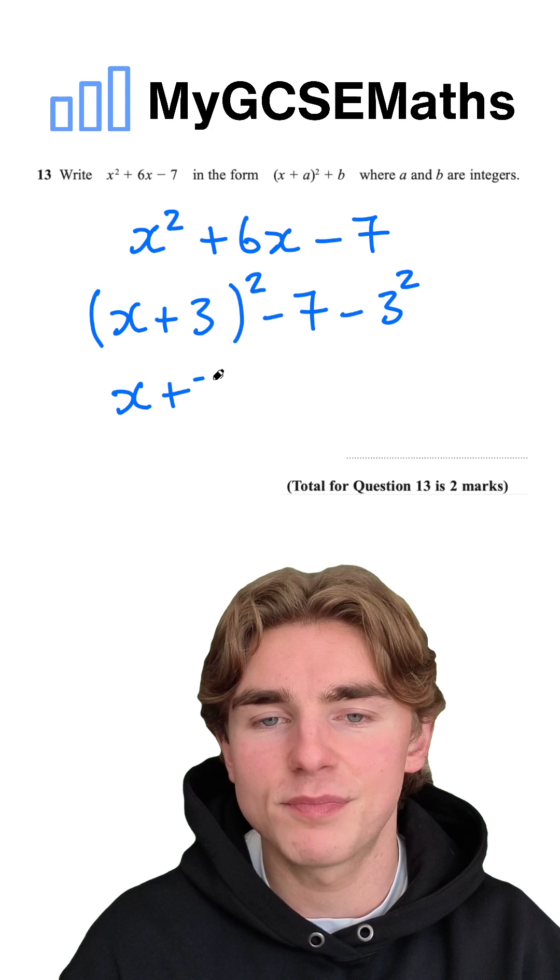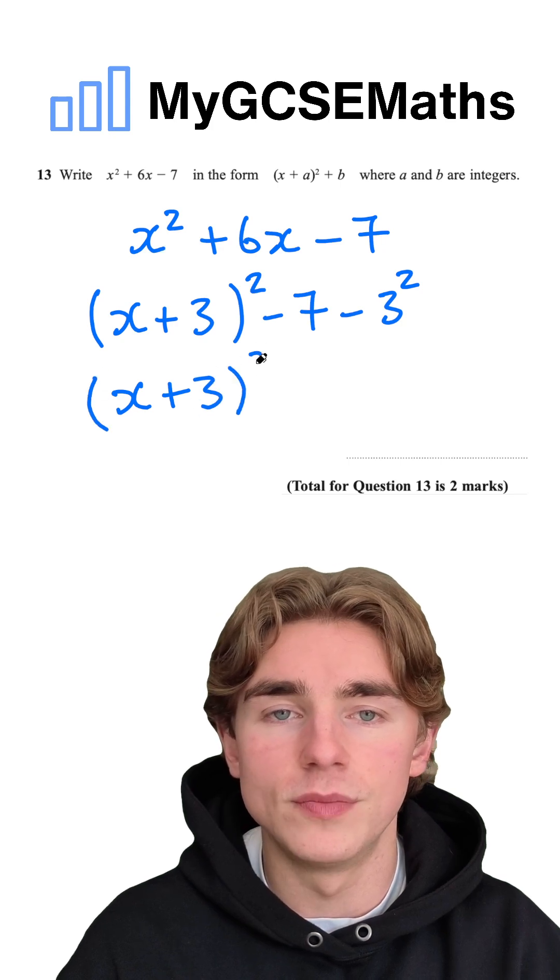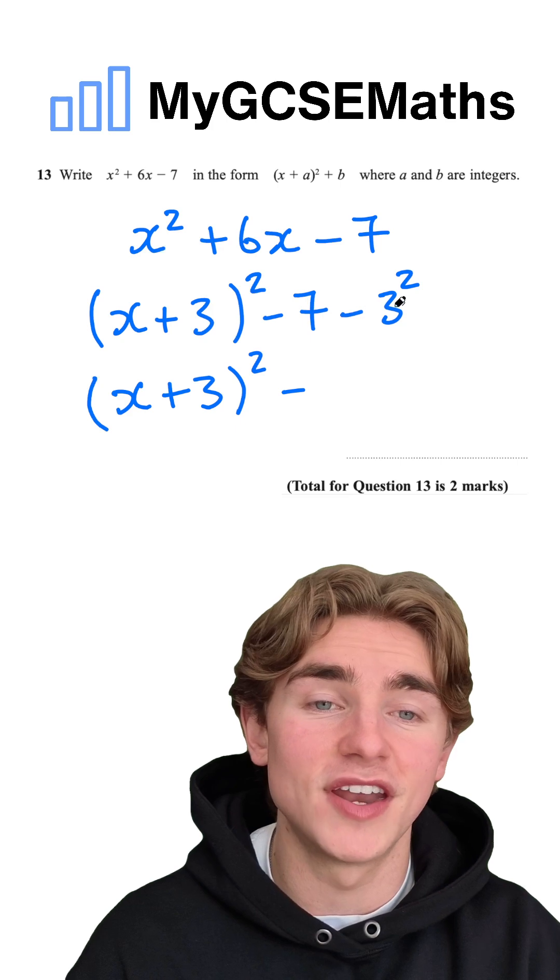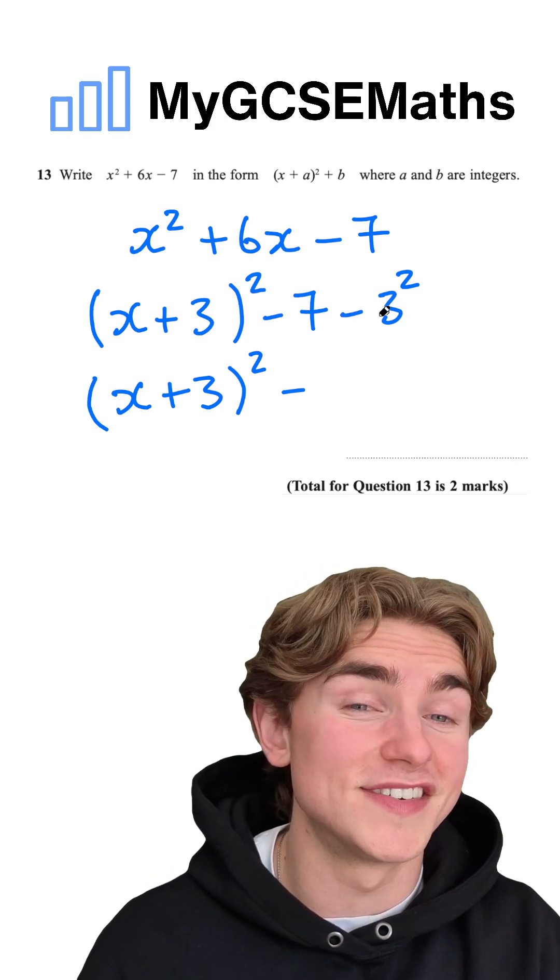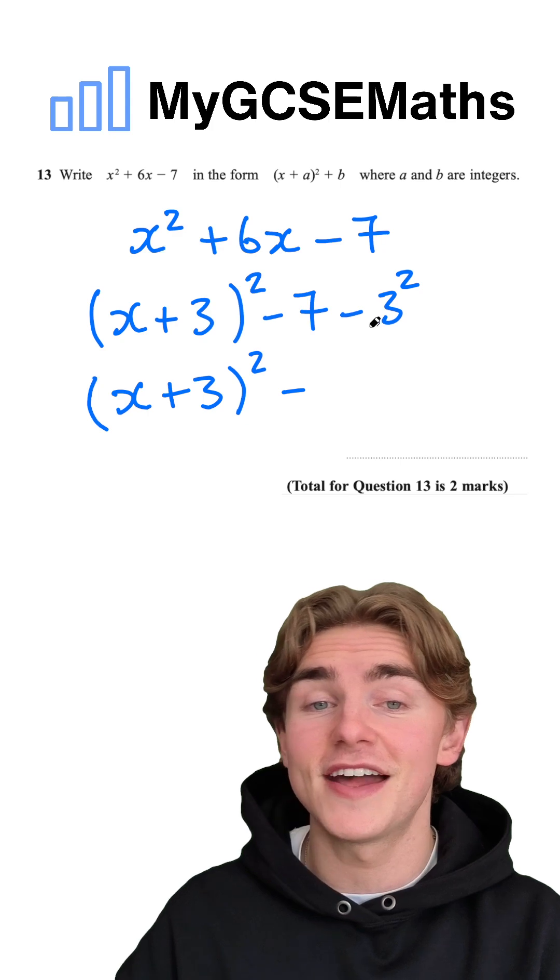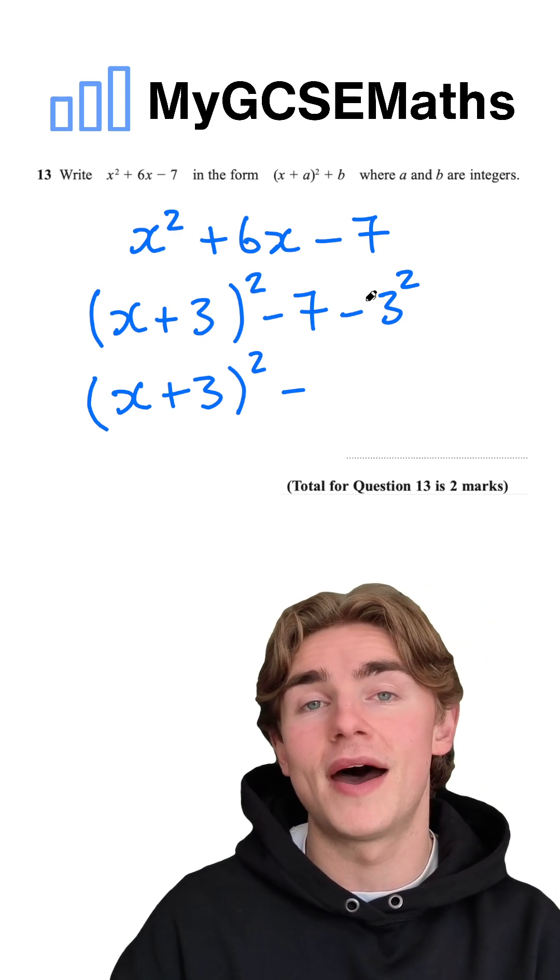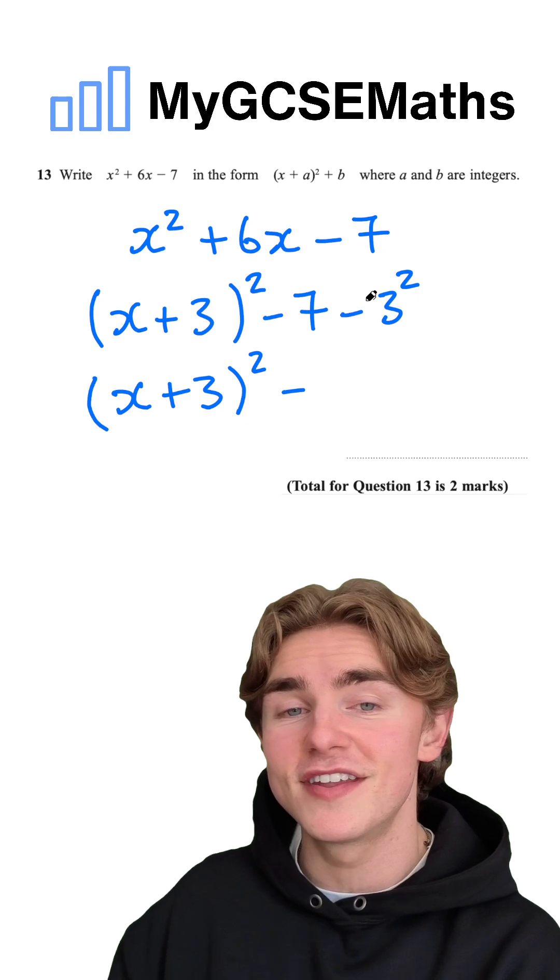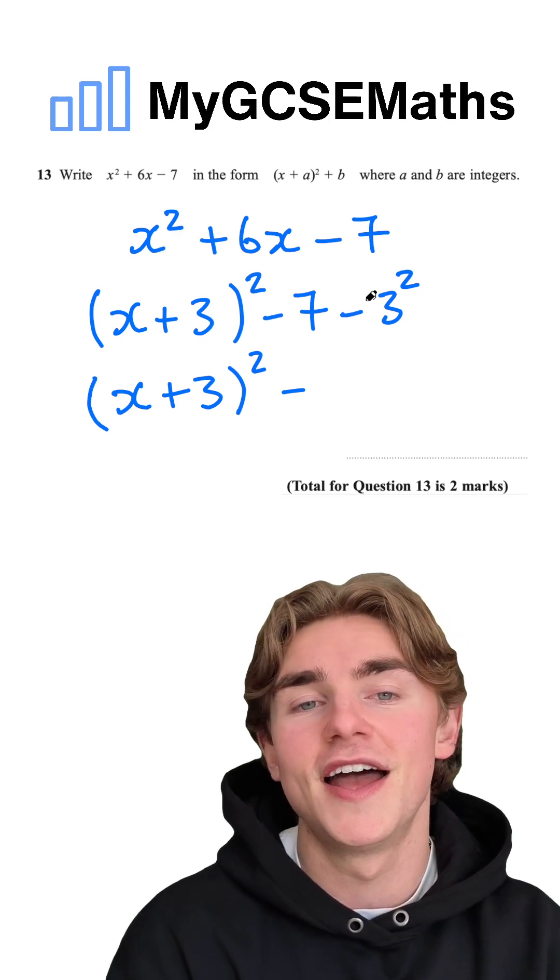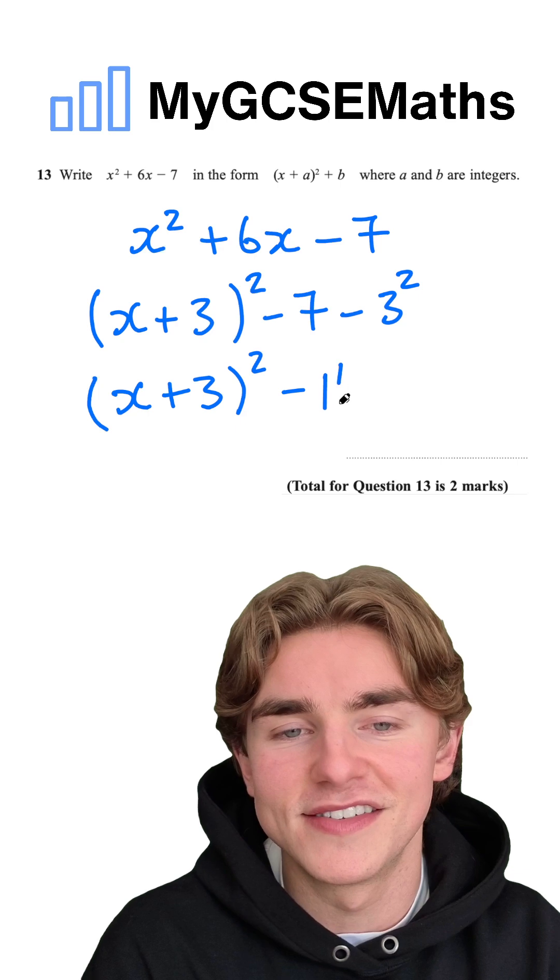Next up, we're going to simplify this. We're going to have x plus 3 and that is going to be squared and then we're going to take away 7. Then we're going to have minus 3 squared, which is 9. So we essentially have minus 7, minus 9. We start at minus 7 on the number line. We move 9 to the left and we're going to end up with minus 16.